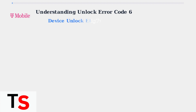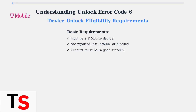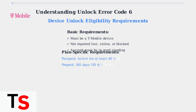To fix Error Code 6, you first need to check if your device meets T-Mobile's unlock eligibility requirements. The device must be sold by T-Mobile, not reported as lost or stolen, and your account must be in good standing. The requirements differ based on your plan type. For postpaid plans, the device must be active on T-Mobile for at least 40 days.